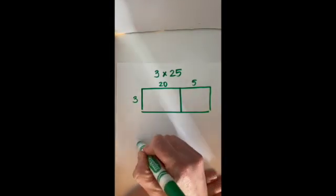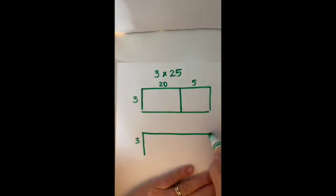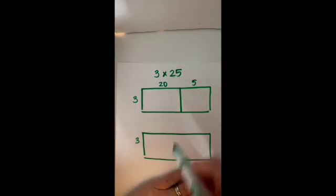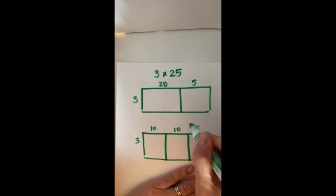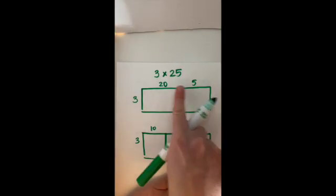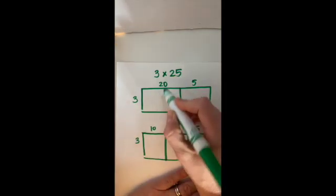I could draw a different rectangle and instead break up that 25 into three parts, like 10, 10, and 5. Both of these work. They both add up to 25, so it's just about whichever one works better for your brain.